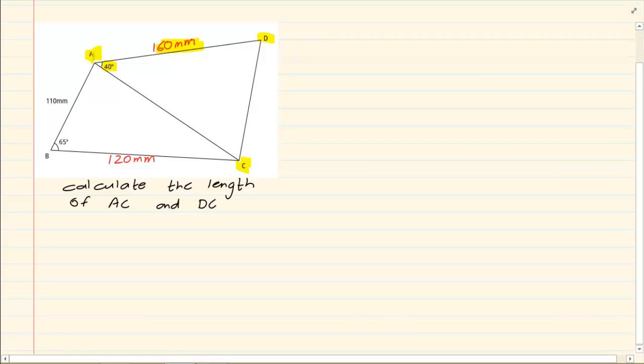But if you look at triangle A, B, C, then I have one, two, three bits of information. So the safest place or the best place to work it is the triangle that has the most information. So I'm going to work with A, B, C.